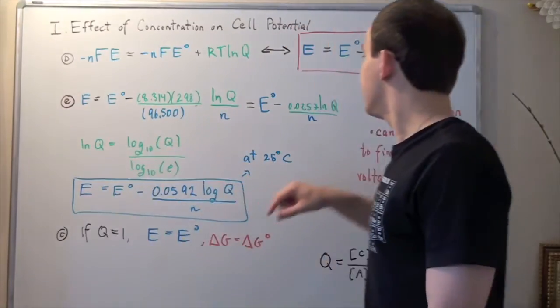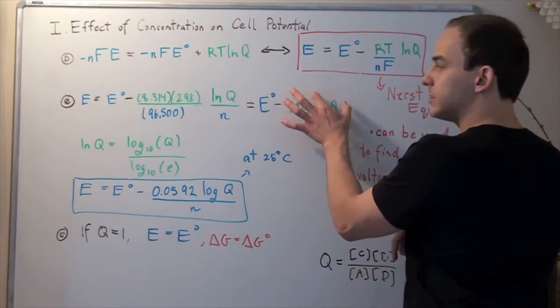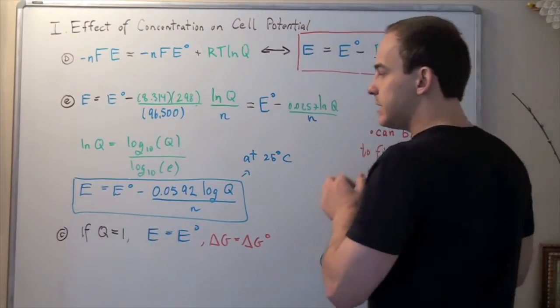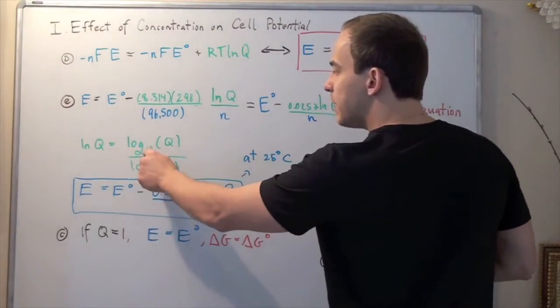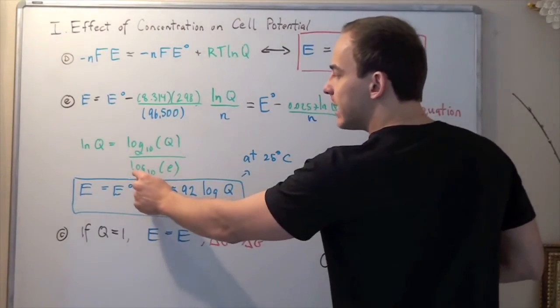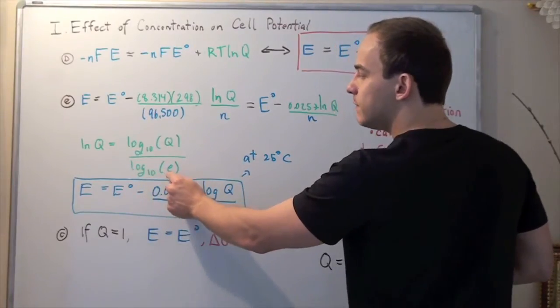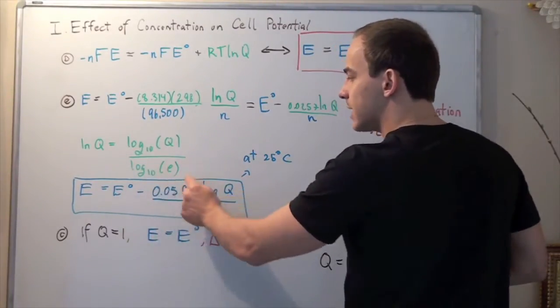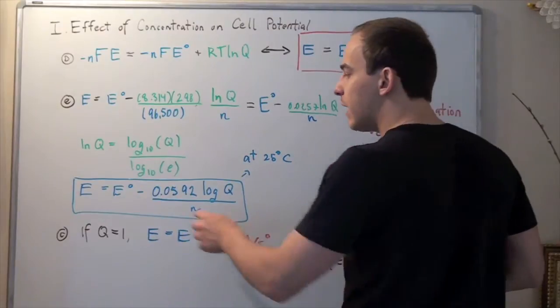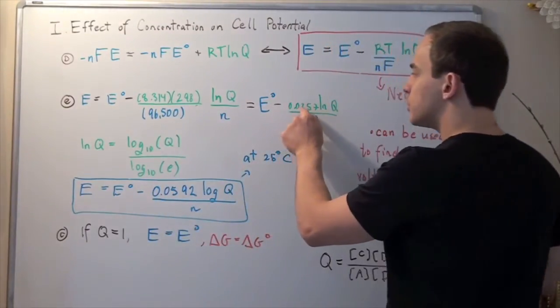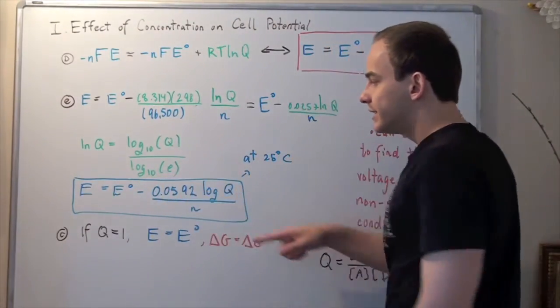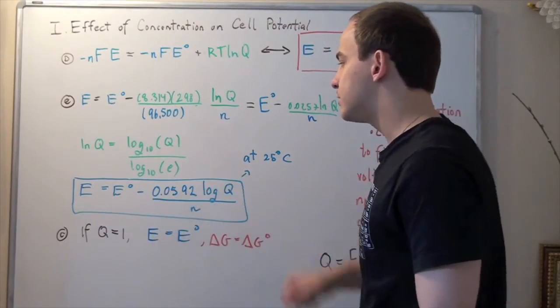So we take this, we plug it into this lnQ, and that means we are left with log base 10 of Q on the top, and on the bottom we have this log base 10 of e. We plug this into the calculator, and then we divide 0.0257 by this number to get 0.0592.